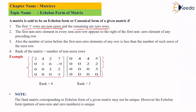Now let's check the rank. The formula is: the rank of a matrix equals the number of non-zero rows in the given matrix. Since the first matrix has four non-zero rows, its rank is 4. In the second matrix, the number of non-zero rows is 3, so the rank is 3.